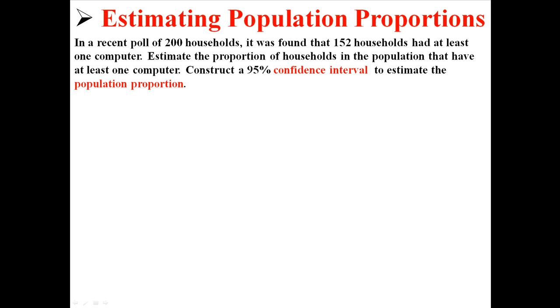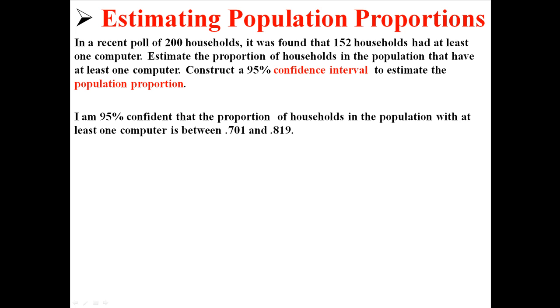I already went through this whole example if you want to look that up, but we found out that we were 95% confident that the proportion of households in the population with at least one computer was between 0.701 and 0.819. Really what we found was that our point estimate was 0.76 plus or minus a margin of error of 0.059.